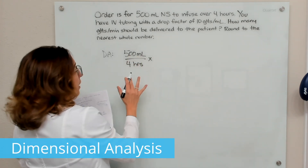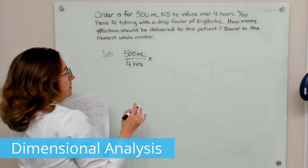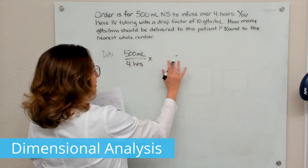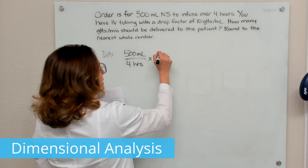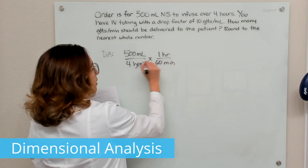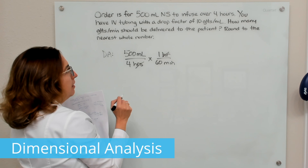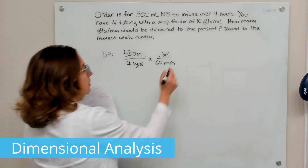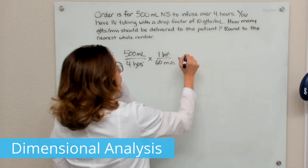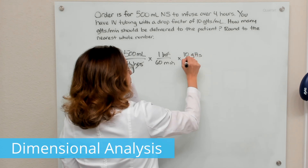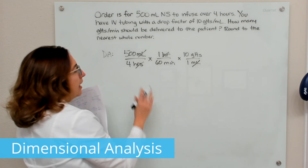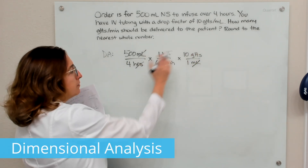I don't want milliliters per hour — I want drops per minute, so I'll multiply times conversion factors to get there. Starting with 500 ml over 4 hours, I multiply by 1 hour over 60 minutes so the hours cross off, giving milliliters per minute. Then I multiply by the drop factor of 10 drops per 1 ml, and the ml's cross off, leaving me with drops per minute.